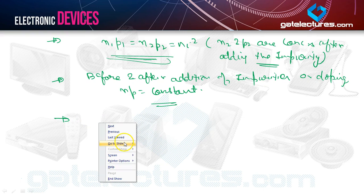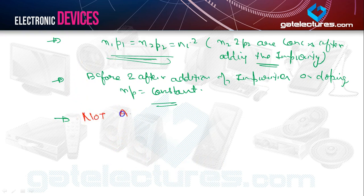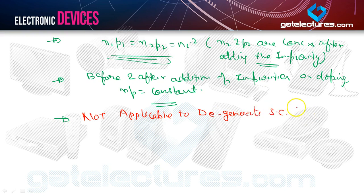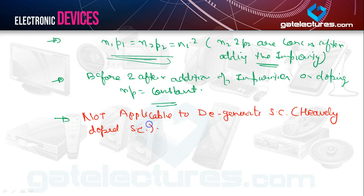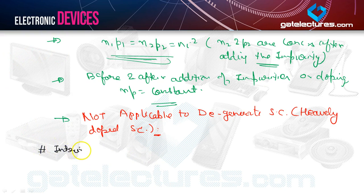It is important to note that the mass action law is not applicable to degenerate semiconductors, which means heavily doped semiconductors. In a heavily doped semiconductor, the concentration of minority charge carriers is nearly negligible — you cannot compare minority carrier concentration with majority carriers. So the mass action law is not applicable for degenerate semiconductors.